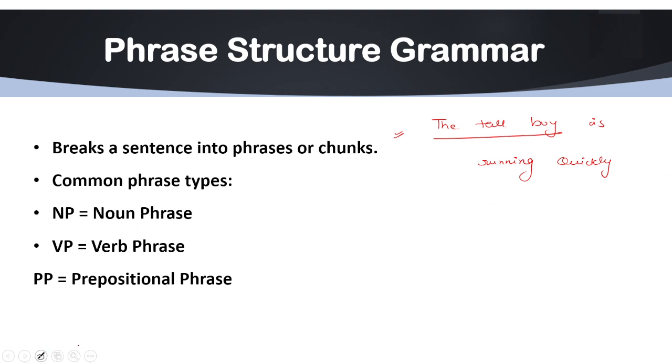Let me change this. The verb phrase is 'is running quickly.' It is your verb phrase and it is your noun phrase.